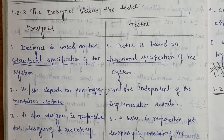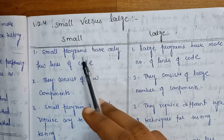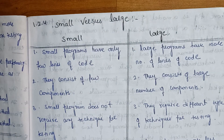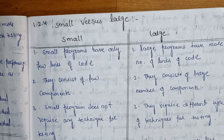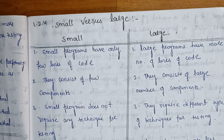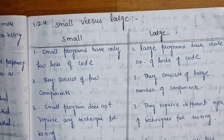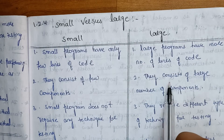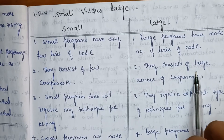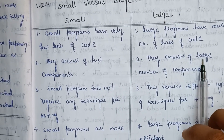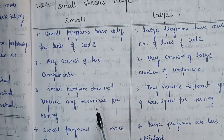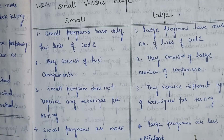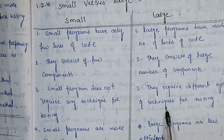Last one is small versus large programs. Small programs have only a few lines of code and consist of few components. Large programs have more number of lines of code and consist of a large number of components. Small programs do not require any special technique for testing, whereas large programs require different types of techniques for testing.